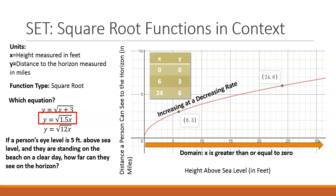Then we are asked if a person's eye level is 5 feet above sea level and they are standing on the beach on a clear day, how far can they see on the horizon? Our feet above sea level is our x value, so we will plug 5 into our function for x and we find that a person can see 2.7 miles.